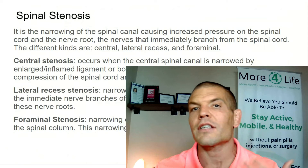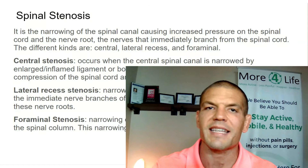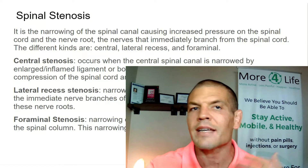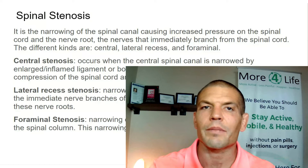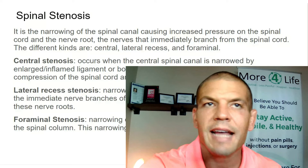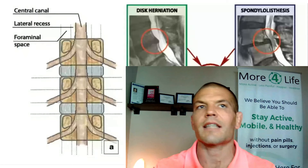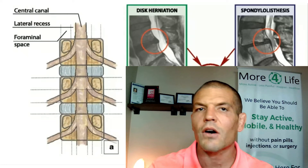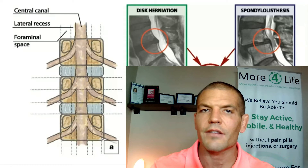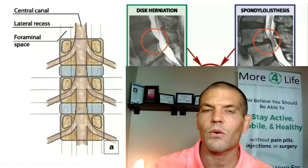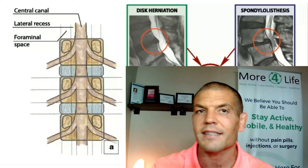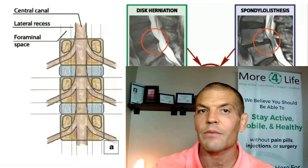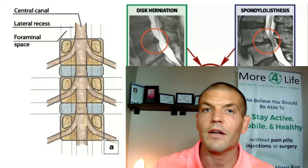Spinal stenosis means a narrowing of a space — that's what stenosis means. You can get that in several different places: either in the central canal, where the spinal cord runs, or on the peripheral nerves — either just outside the spinal cord, known as lateral recess stenosis, or in the spaces where the nerve roots exit the spine, known as foraminal stenosis.